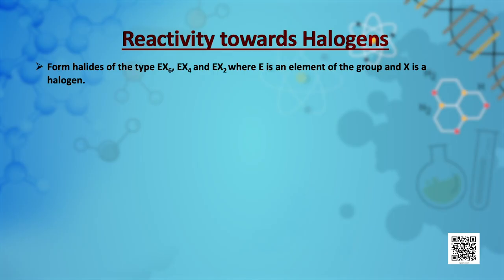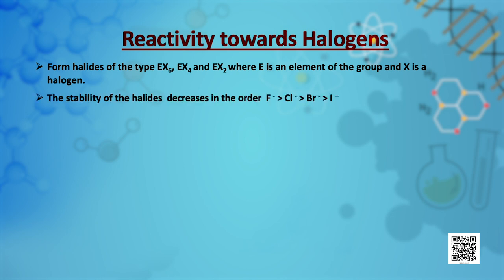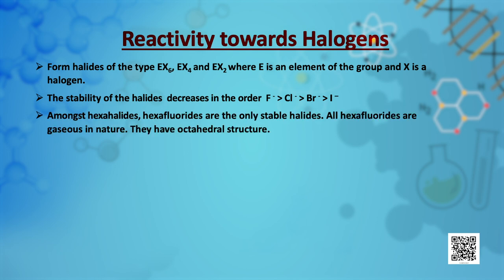Elements of group 16 form a large number of halides of the types EX6, EX4 and EX2, where E is an element of the group and X is a halogen. The stability of the halides decreases in the order: fluorides being most stable, followed by chlorides, then bromides and iodides. Amongst hexahalides, hexafluorides are the only stable halides.